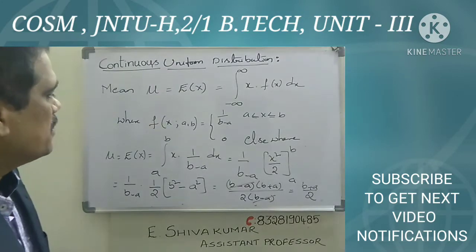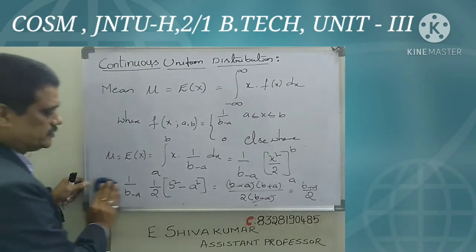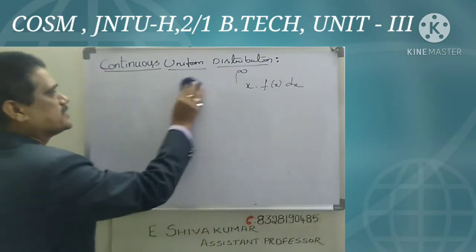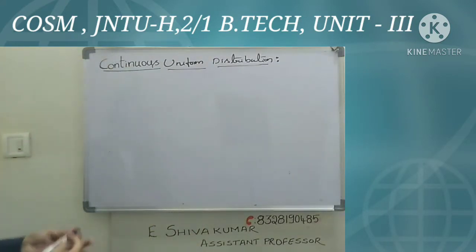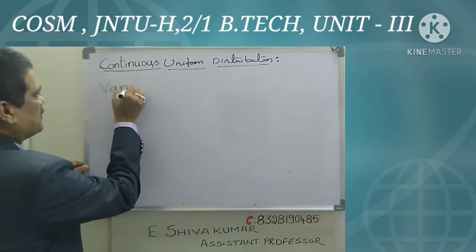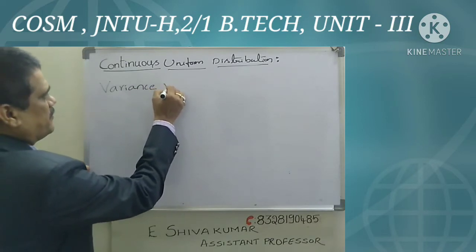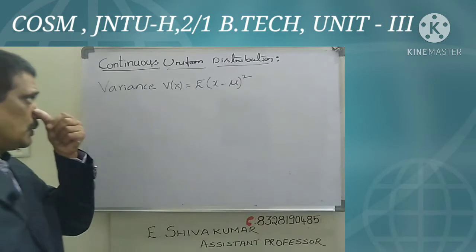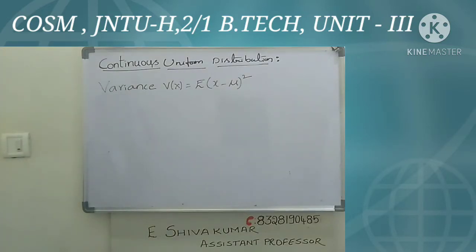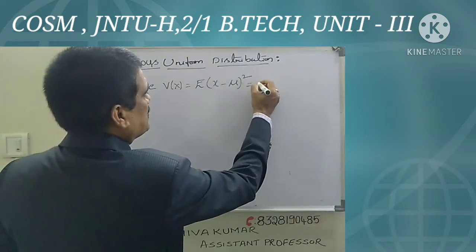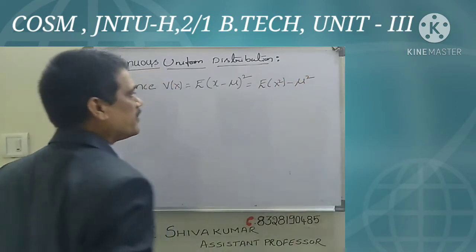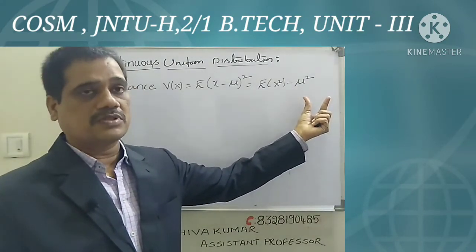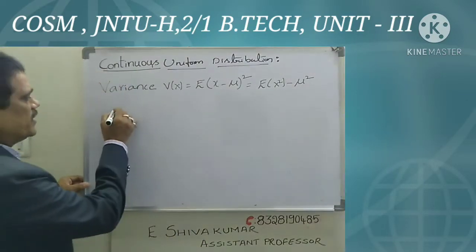Similarly, we are going to find the variance σ². The variance V(X) = E[X²] − μ². We already know μ = (a + b)/2, so μ² = (a + b)²/4. Now I am going to find E[X²].